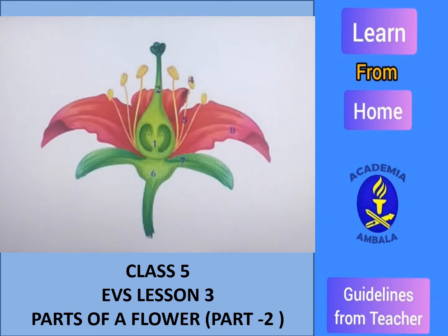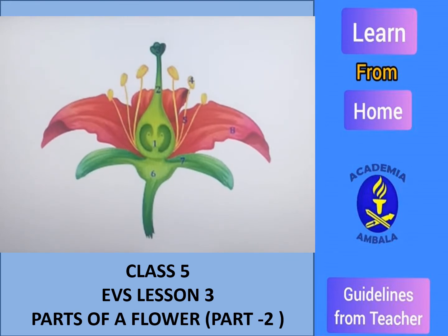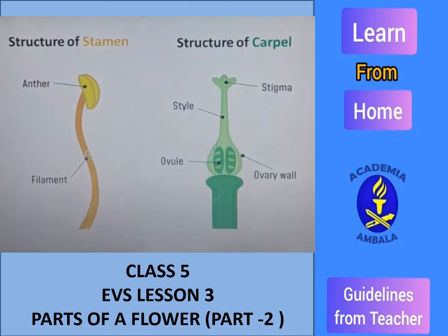Inside the flower, we can have many more parts. You can see the vase-like structure which is green in color and many yellow tube-like structures around it. The yellow color structure is called stamen and the one which is green in color is called carpel.